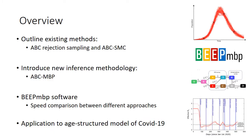To give a brief overview of the talk, I'll start by outlining some existing methods, in particular ABC Rejection Sampling and ABC SMC, and then I'll go on to describe a new inference methodology called ABC MBP. I'll mention a software tool we've been developing called BEEP MBP, and this will be used to perform a speed comparison for a number of inference algorithms using a set of benchmark models. Finally, I'll provide results for an age-structured model of COVID-19 applied to England.